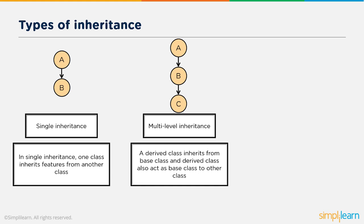Next we have multilevel inheritance. A derived class inherits from a base class, and the derived class also acts as a base class to another class. In this example, class B is derived from class A, and then class C is derived from class B. Because of this, class C contains properties of both class A and B.